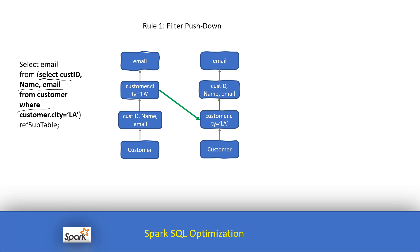For this example we have created a subquery. The idea is to find out the email of a particular city — that is our goal. How will we make sure we are storing the minimum required data in memory so Spark can process it fast? The customer table has all records, and our criteria is that particular city — we are not looking for all cities, just city LA — and from that we are looking at customer ID, name, and email.